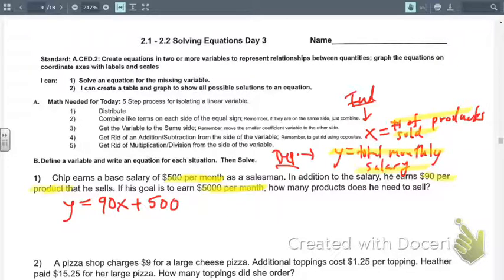Now we have two variables, a Y and an X, and so we can't really solve. There's got to be another piece of information we've got to plug into this puzzle. And that's going to be the $5,000. That's his goal. His goal is to earn $5,000 per month. So we're going to plug $5,000 in for Y. And that's going to equal 90X plus $500. And now we're in a position to solve for the number of products sold and to answer this question: how many products does he need to sell to make $5,000 a month?